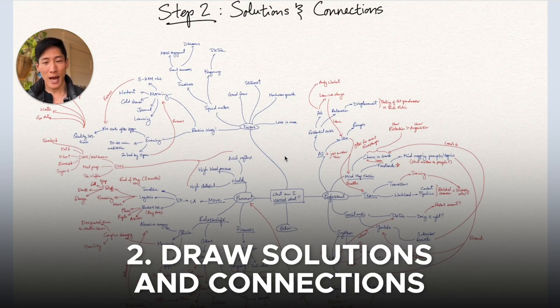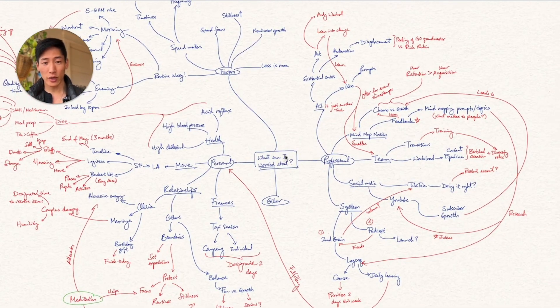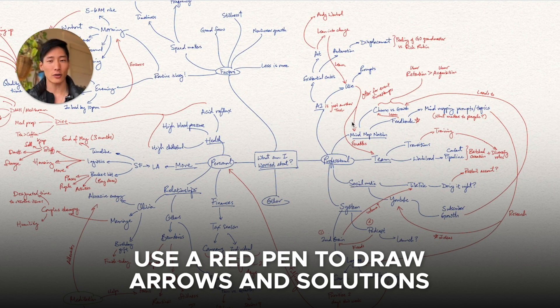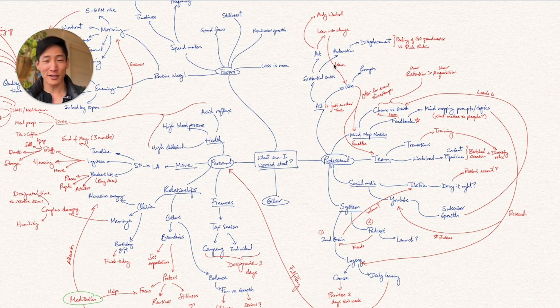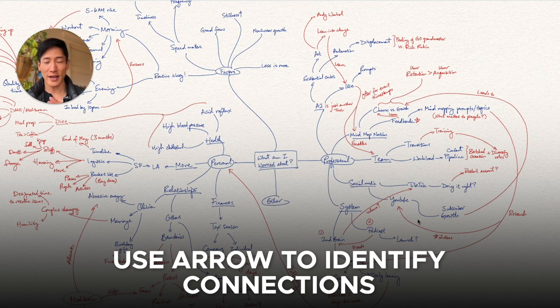Once we've expanded out all the complexities and elements, the next step is to map out and expand out the solutions and connections. So you'll notice for this step, I like using a different color pen just to have some contrast so it doesn't look like one big mess. So all the red essentially is expanding out the solutions that come to mind that can address each of these sub-components.